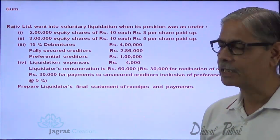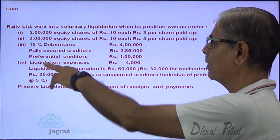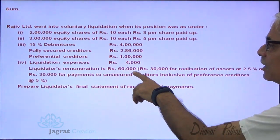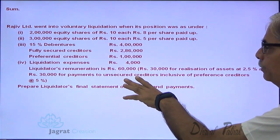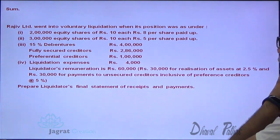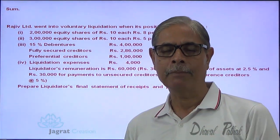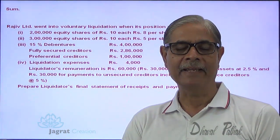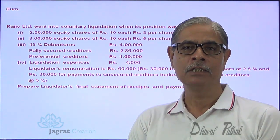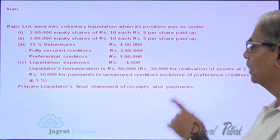15% debentures 4 lakhs, fully secured creditors 2 lakh 86,000, preferential creditors 1 lakh, liquidation expenses 4,000, liquidator's remuneration 60,000. This is 30,000 for realization of assets at 2.5%, so whatever the assets are realized multiplied by 2.5% gives the liquidator's remuneration of 30,000. So 30,000 is 2.5% of assets realized.